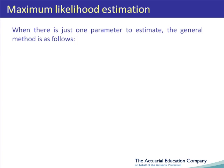Let's now discuss how we carry out the method when there's only one parameter to be estimated. The process is as follows. First of all, we write down the likelihood function. We want to work out the value of the parameter that makes this likelihood function as big as possible, and in order to do that, we need to differentiate and find the turning point.